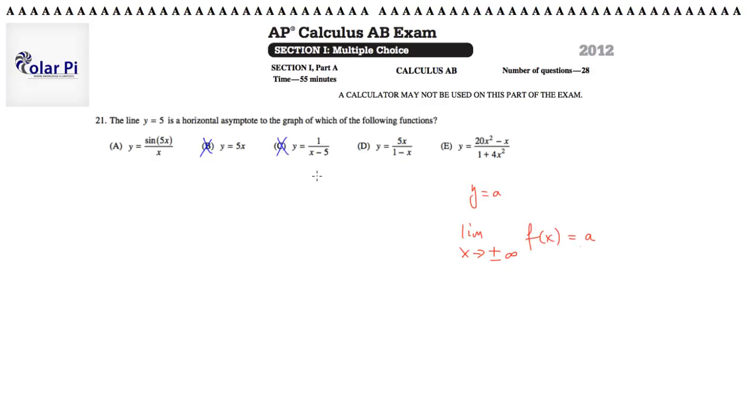b does not give you y equals 5 as a horizontal asymptote. And if you do the same thing with c, you're going to go towards 0. So y equals 0 is a horizontal asymptote in c, but not y equals 5.